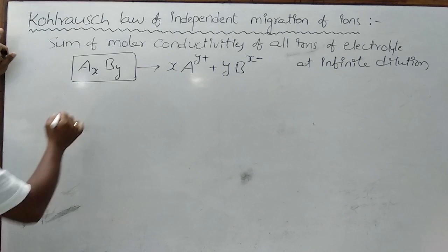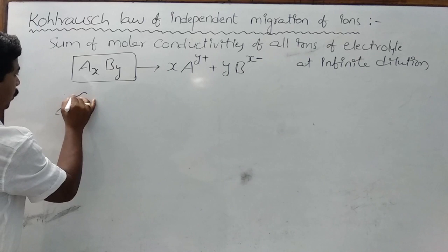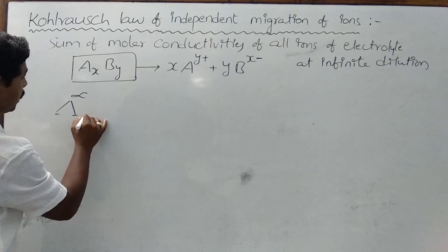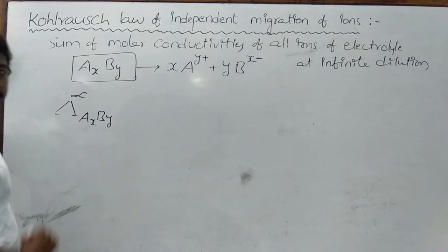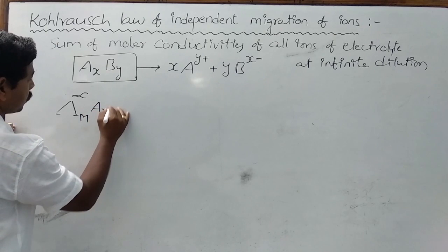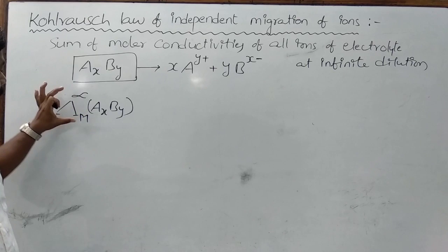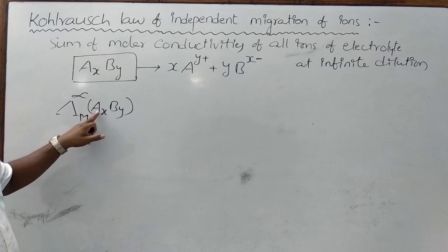According to Kohlrausch's Law, the molar conductance of electrolyte AₓBᵧ at infinite dilution—represented with superscript zero or infinity—is equal to the sum of molar conductivities of all its ions. This is useful to determine the molar conductances of weak electrolytes at infinite dilution.